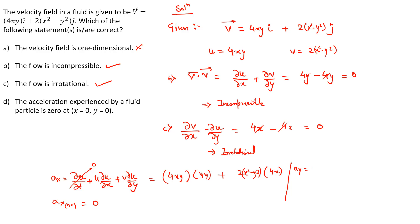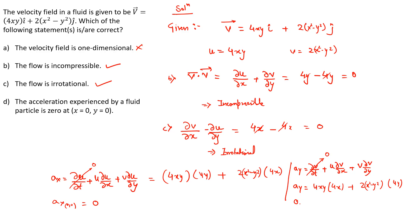Similarly, the y-component ay = ∂v/∂t + u(∂v/∂x) + v(∂v/∂y). Since v is not a function of t, ∂v/∂t = 0. This becomes 4xy · 4x + (2x² - y²) · (-4y). Substituting x = 0 and y = 0, we get ay = 0 as well. So both ax = 0 and ay = 0 at (0, 0).